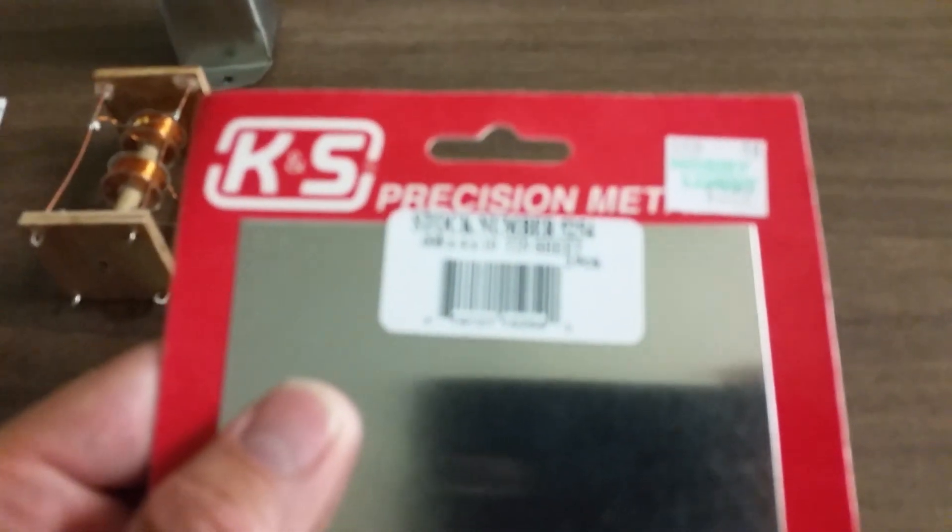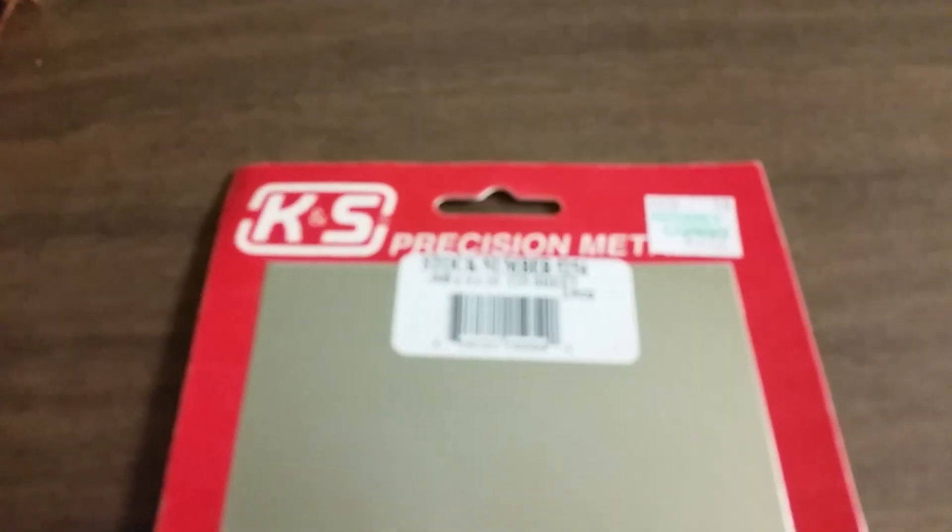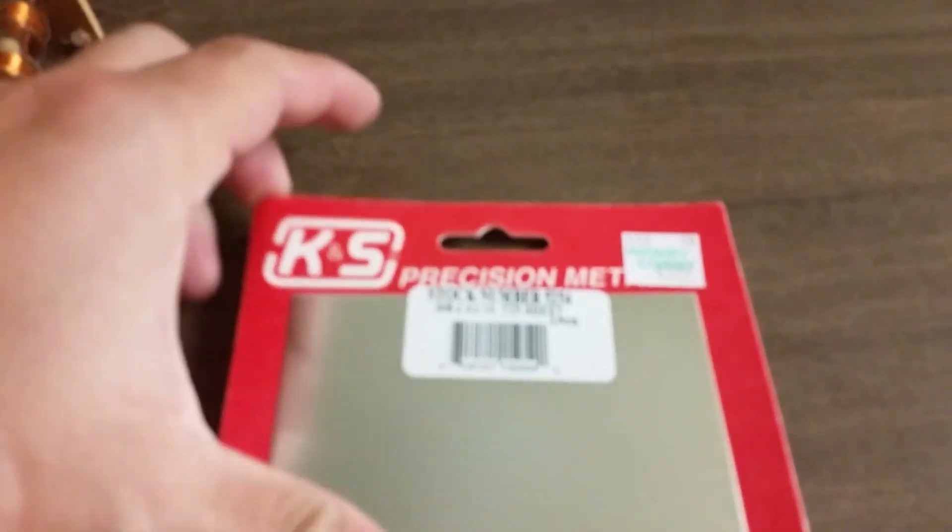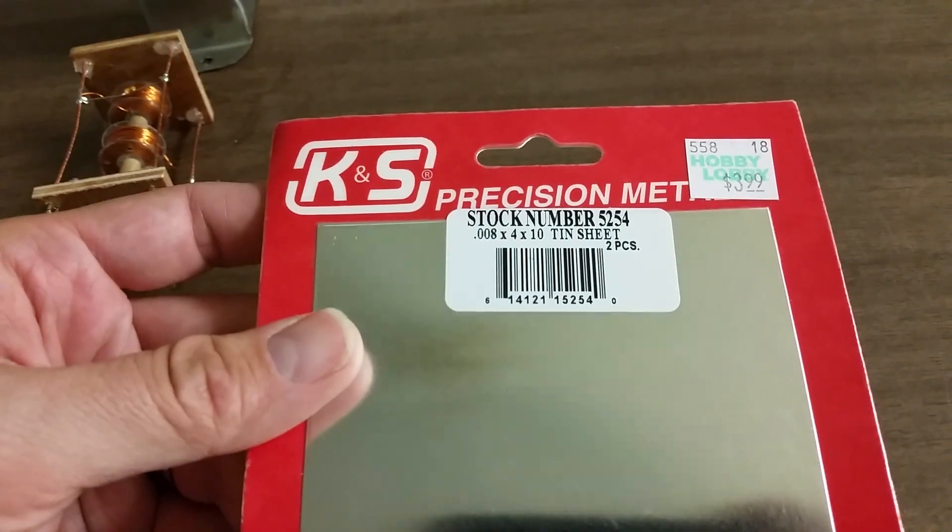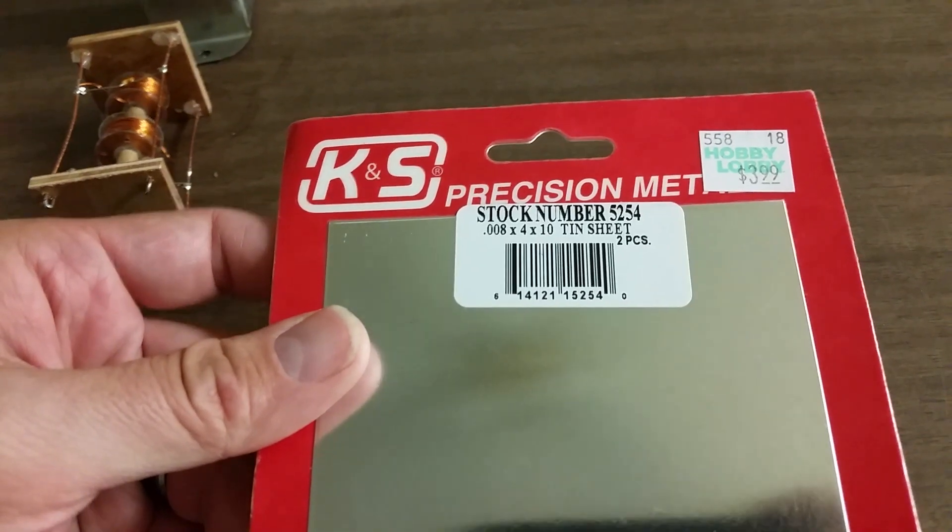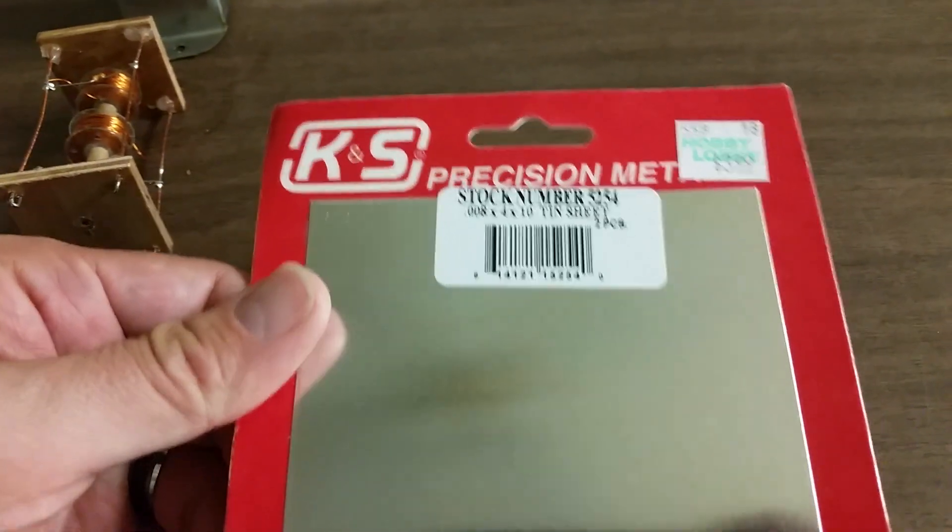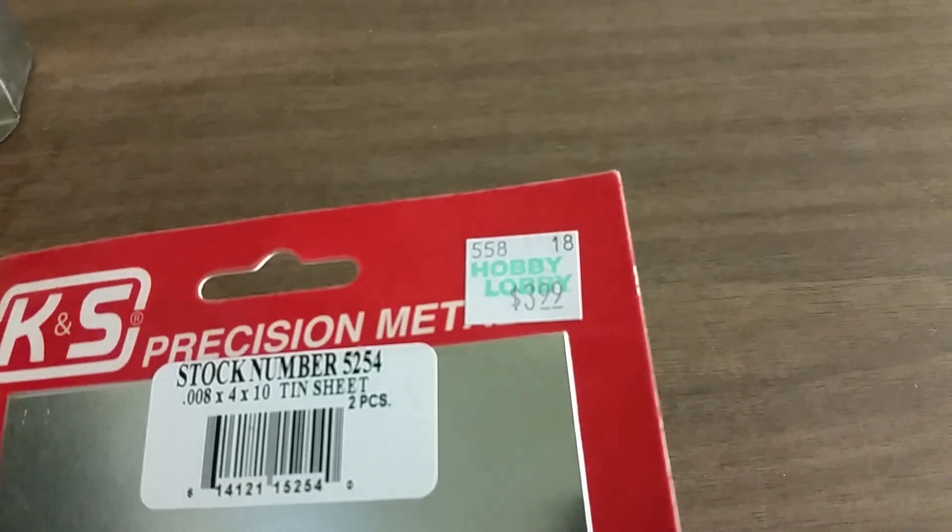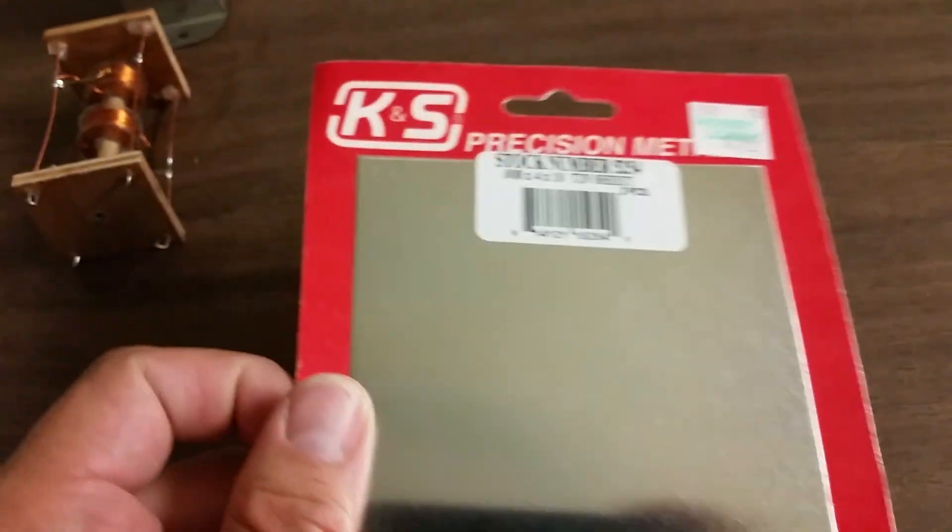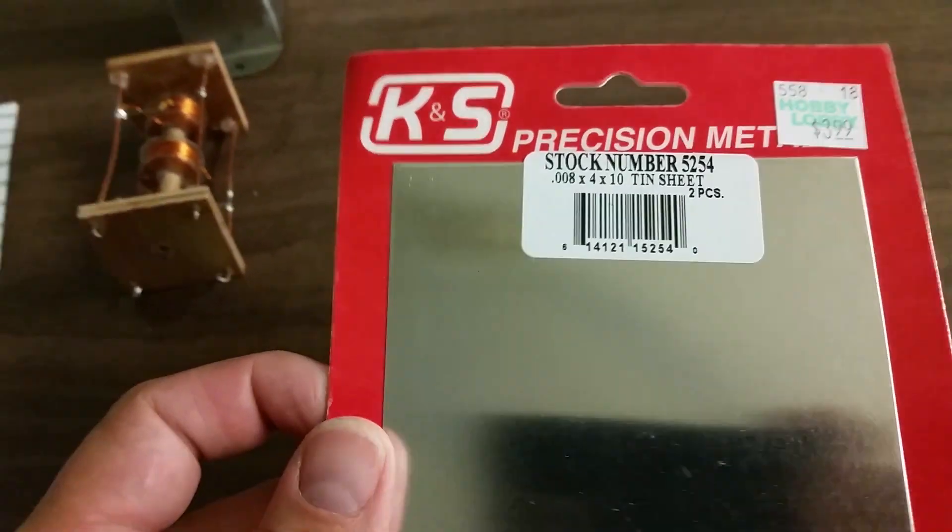The metal I used for the cans is this metal here. It's .008 inches by 4 by 10 inches, tin plated steel. This can be bought at craft stores for not much money and is extremely useful and extremely bendable for any sort of radio shielding application.